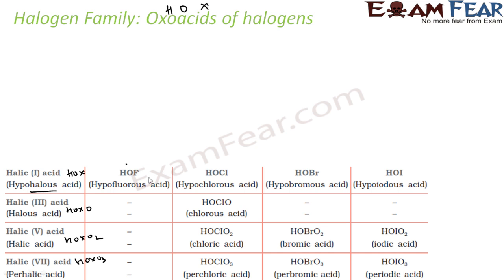For fluorine, it forms only one oxa acid — that is hypofluorous acid. We have explained why: because of the high electronegativity and small size of fluorine, it forms only one oxa acid, which is called hypofluorous acid.